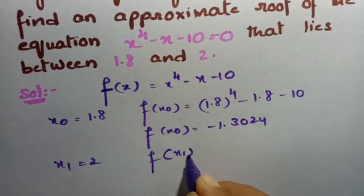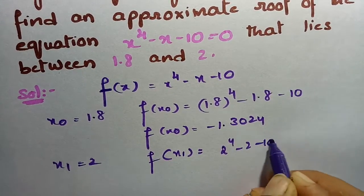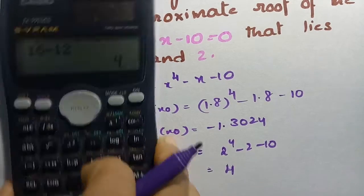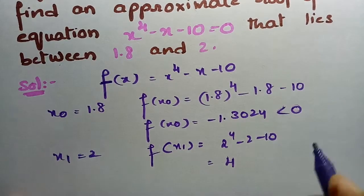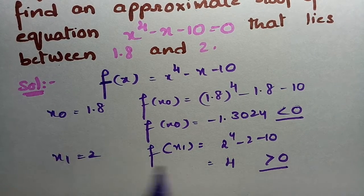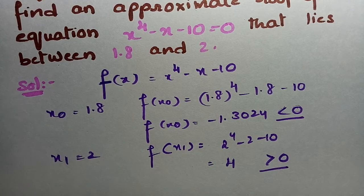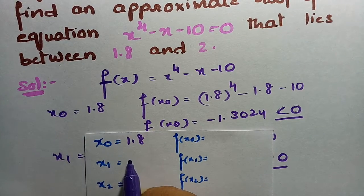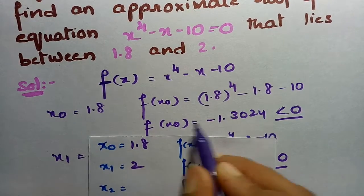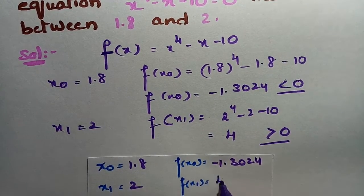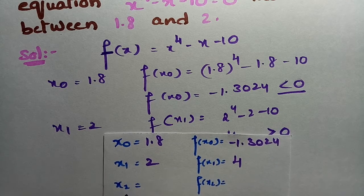Next, x₁ = 2, so f(x₁) = 2⁴ - 2 - 10 = 16 - 12 = 4. If you observe, f(x₀) is a negative value and f(x₁) is a positive value — we are getting different signs. So x₀ = 1.8, x₁ = 2, f(x₀) = -1.3024, and f(x₁) = 4.